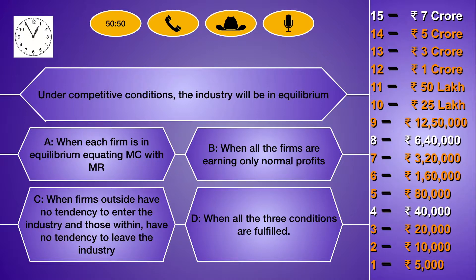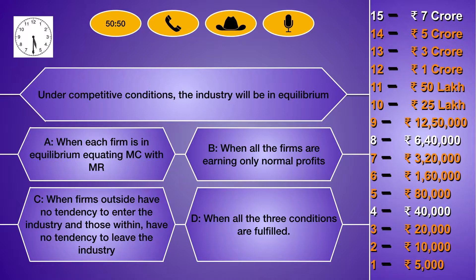Under competitive conditions, the industry will be in equilibrium: (a) when each firm is in equilibrium equating MC with MR, (b) when all the firms are earning only normal profits, (c) when firms outside have no tendency to enter the industry and those within have no tendency to leave the industry, (d) when all the three conditions are fulfilled. The right answer is (d) when all the three conditions are fulfilled.